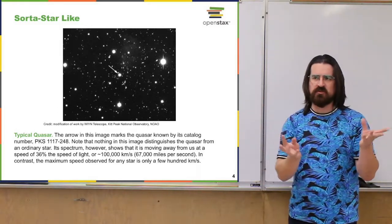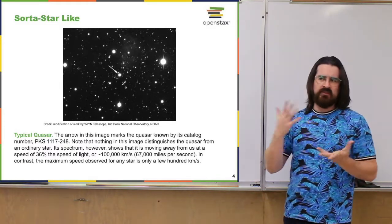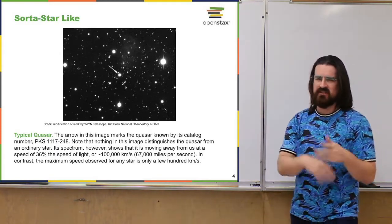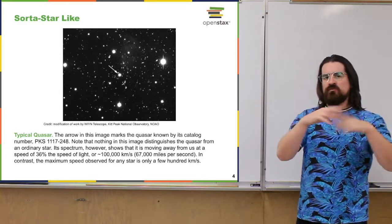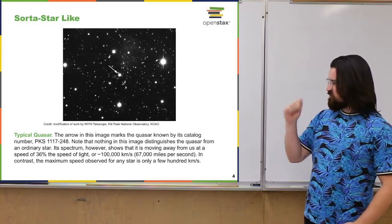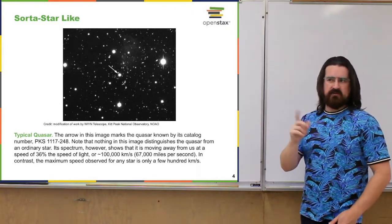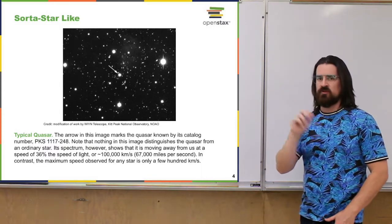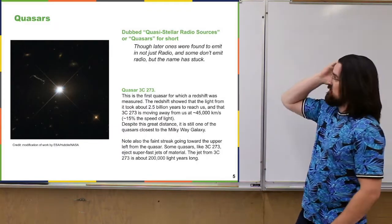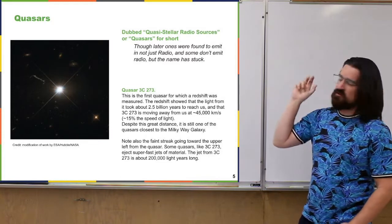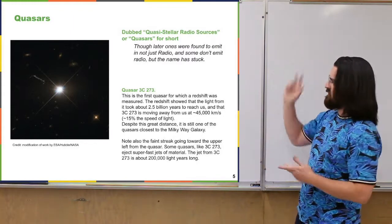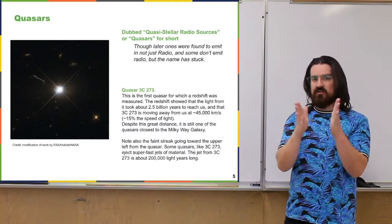Most individual stars we see are pretty much all in our own galaxy. Our sun is basically moving at like 200 kilometers per second around the galaxy — that's roughly how fast stars move inside the galaxy. But this thing seemed kind of like a star and was moving away a thousand times faster than things normally move. The term quasar came from a longer designation: quasi-stellar radio source. Quasi meaning sort of, stellar meaning star — so it's sort of like a star and a source of radio waves.